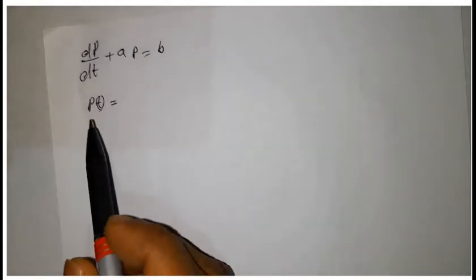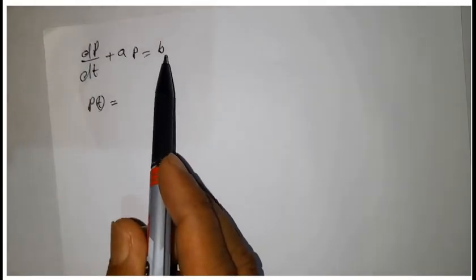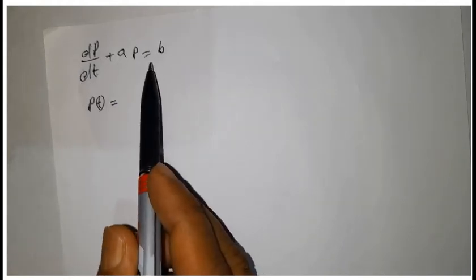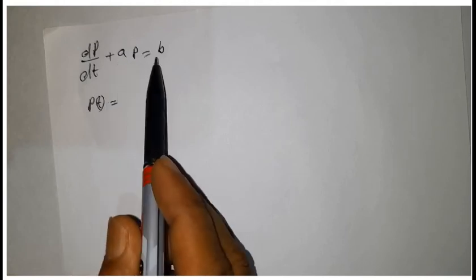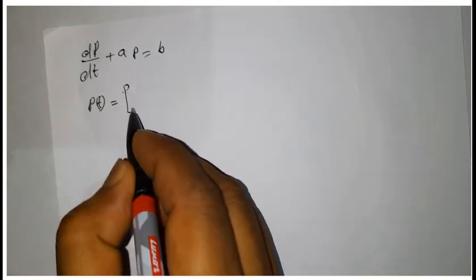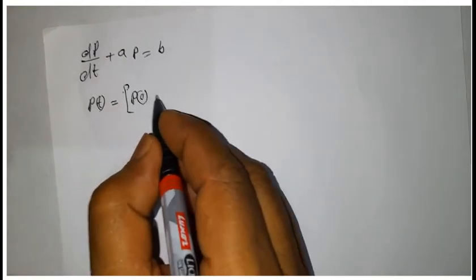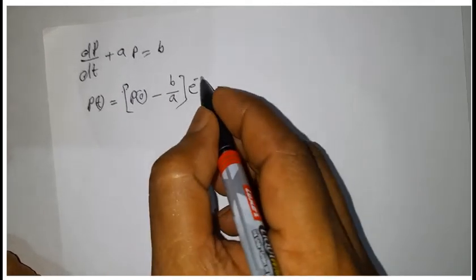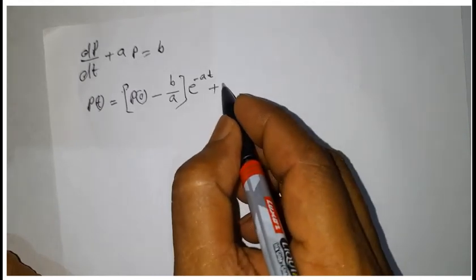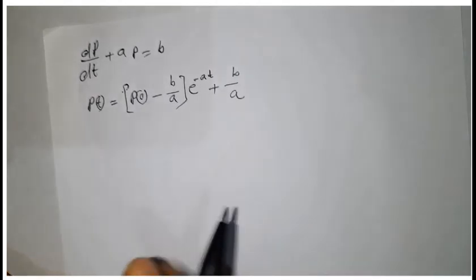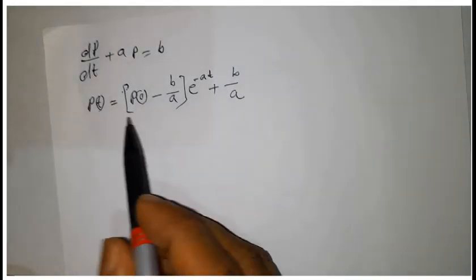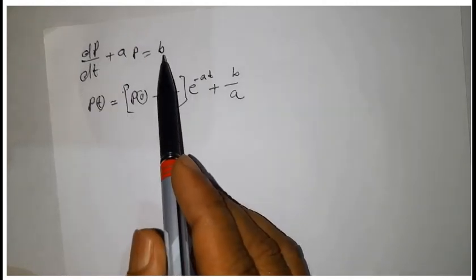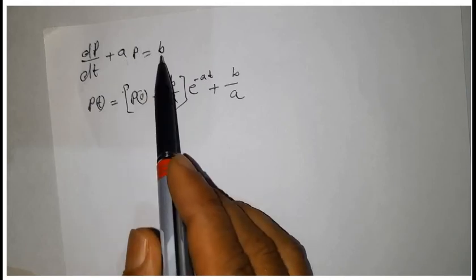We know that the solution of a first-order linear differential equation with constant coefficient a and constant term b is: P(t) = (P_0 minus b/a)·e^(minus a·t) plus b/a. This is the general solution of this type of first-order linear differential equation.